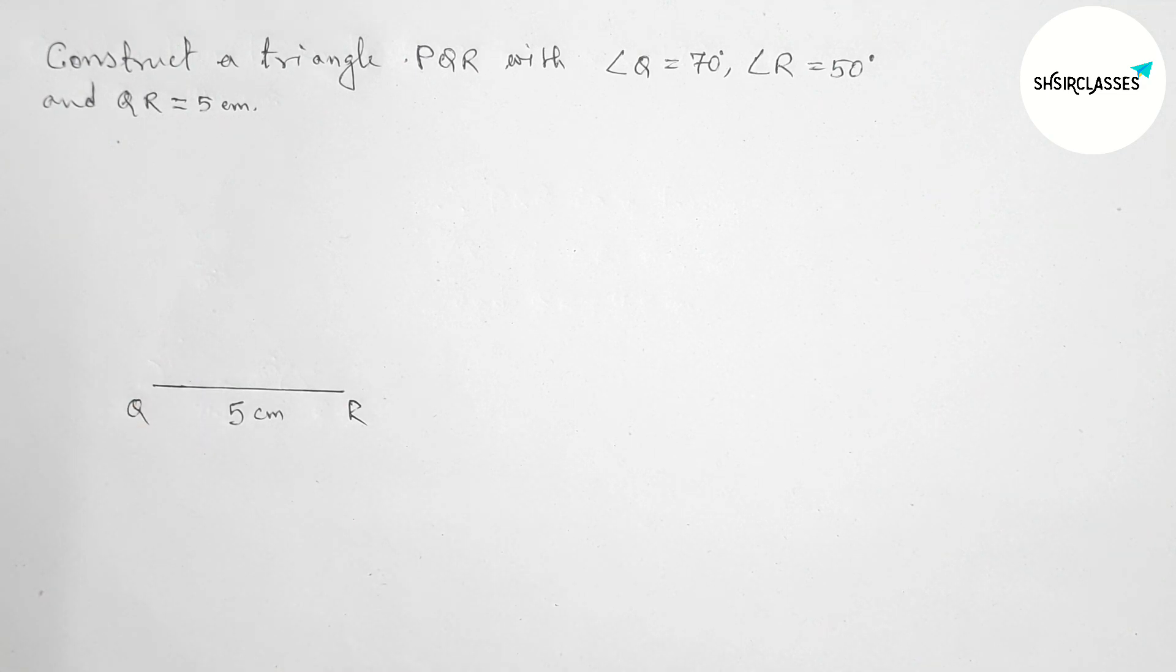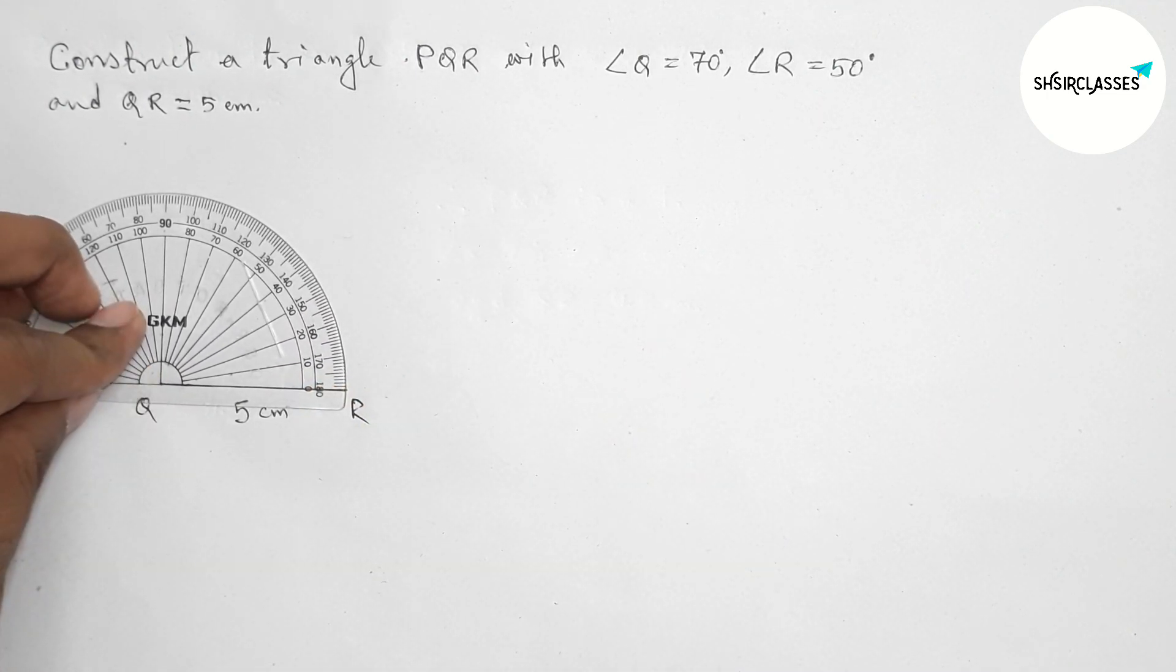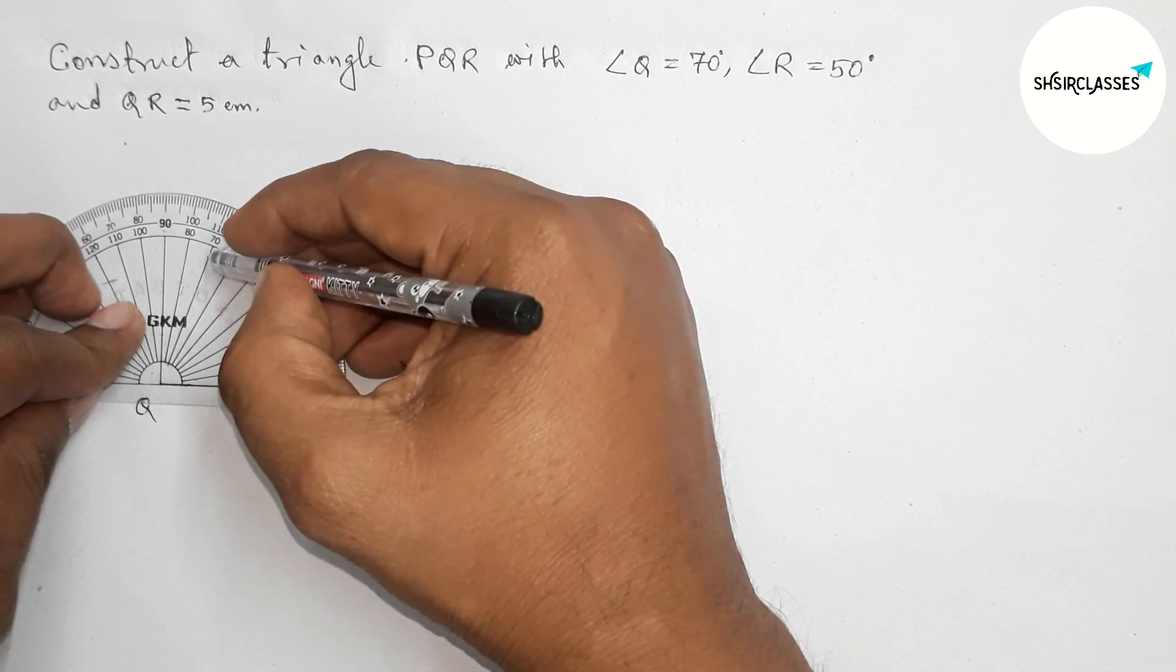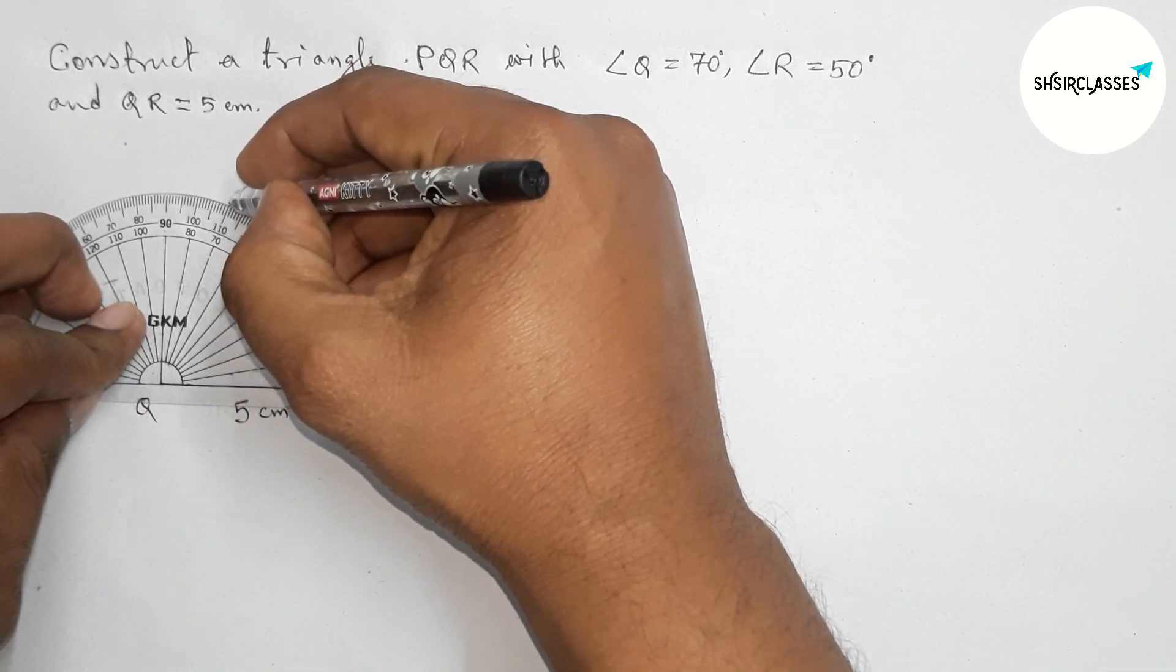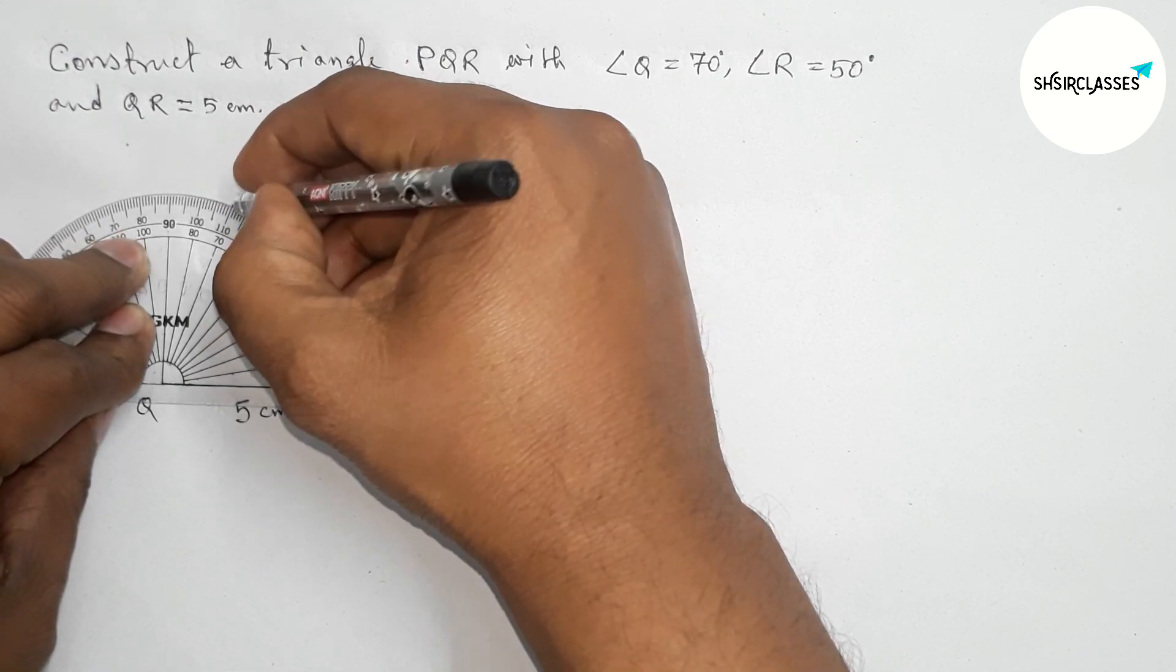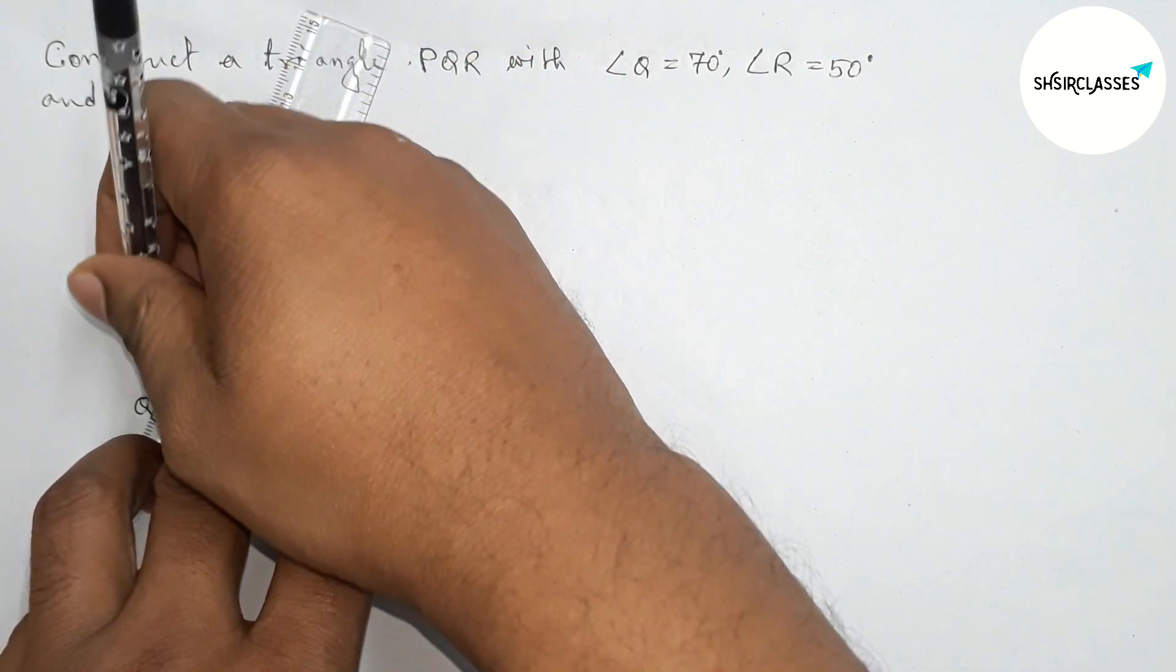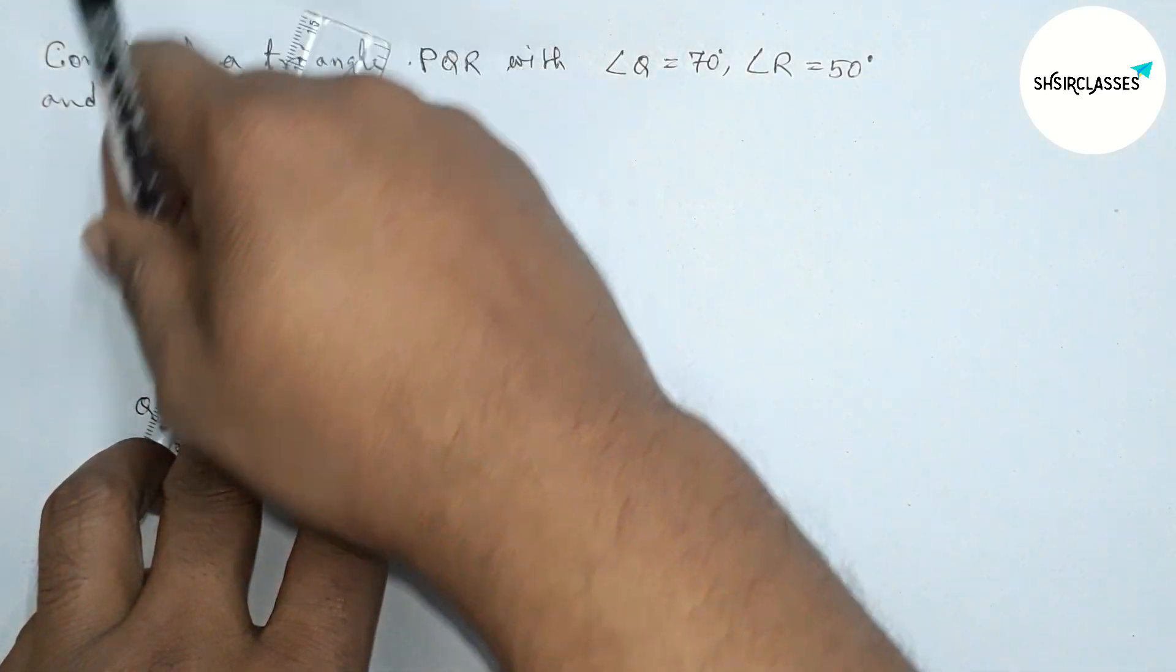Drawing a 70 degree angle on point Q with the help of a protractor. So first measuring 70 degree angle from this side. Here this is 70 degrees, so first marking here 70 degrees, now joining this to get the 70 degree angle.